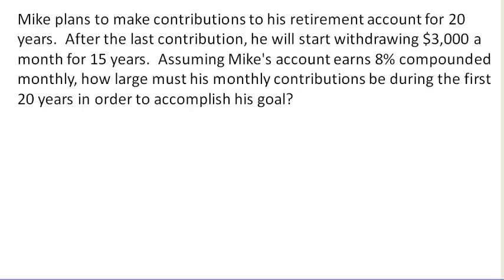Mike plans to make contributions to his retirement account for 20 years, and after the last contribution, he'll start withdrawing $3,000 a month for 15 years. Assuming Mike's account earns 8% compounded monthly, how large must his monthly contributions be during the first 20 years to accomplish his goal?